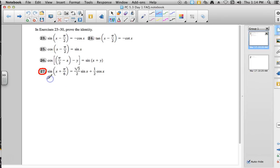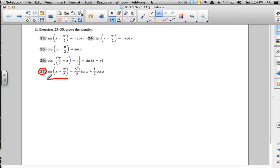So what I want to start off with here is the left-hand side, because we have a really great formula that will take us through that. And that would be our formula for the sum of two sine angles here. We've got sine of x plus pi over 6.